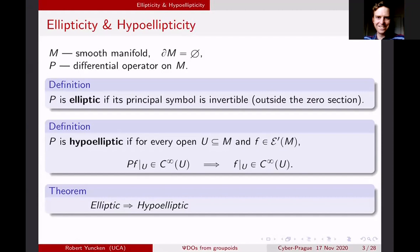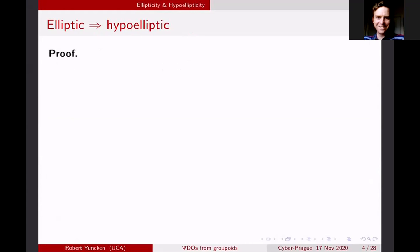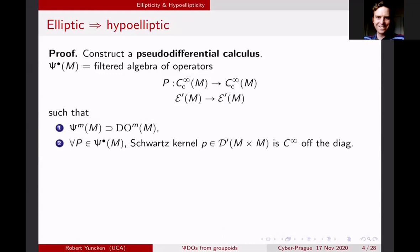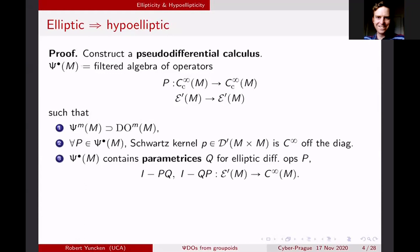Let's prove that elliptic operators are hypo-elliptic, since this is central to everything we're doing here. The modern proof is to construct a pseudo-differential calculus — a filtered algebra of operators Ψ^m — with three properties: first, it contains the differential operators; second, all Schwartz kernels of these operators are C∞ off the diagonal, meaning they won't increase the singular support; and third, it contains parametrices for the elliptic differential operators. A parametrix Q for an operator P is one such that I − PQ and I − QP are smoothing operators.